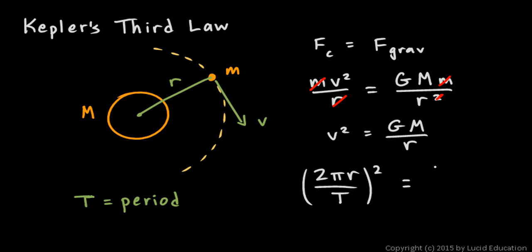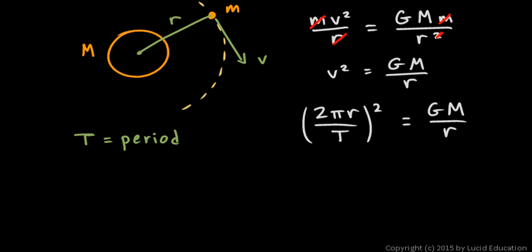On the left, let's write 2πr divided by T, and it's velocity squared, so we need to square this. The right side is still GM over r. Now let's square everything in the parentheses. The 2 squared will be 4, and all the other variables will be squared, so we'll have 4π²r² over T² equals GM over r.